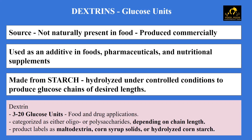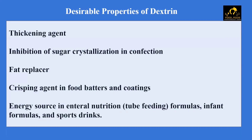Let's see the desirable properties and applications of dextrin. They are used as a thickening agent, and also in inhibition of sugar crystallization in confections. Dextrin is also used as a fat replacer and a crisping agent in food batters and coatings. It is also used as an energy source for infant formulas, sports drinks, tube feeding, and more.